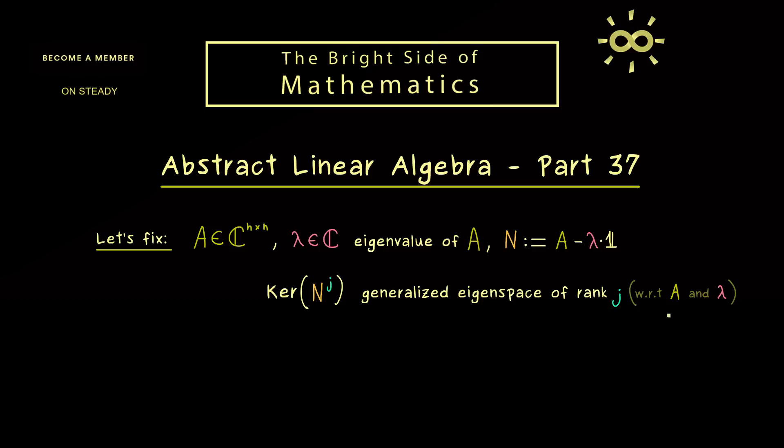However, these two things are fixed now. In this video we will not change the matrix A or the eigenvalue lambda. Therefore we can just abbreviate the whole eigenspace by a letter capital E, and the rank will be important so I use a superscript j. So there we have it. This is the definition. These are the subspaces we will talk about in this video.